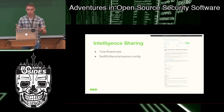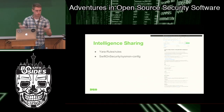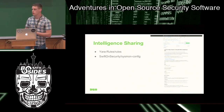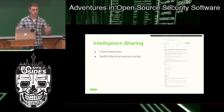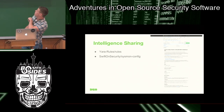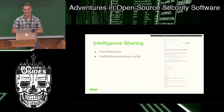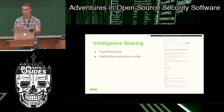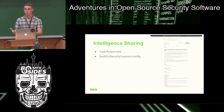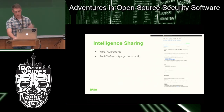And then most people are probably familiar with the Twitter personality Swift on Security. They maintain a Sysmon config which standardizes alerting and event information for Windows environments. It's extremely useful. It's a configuration file, but there's context around it — here's why you might want to use this, here's some ways that you can roll it out. So that's intelligence sharing.